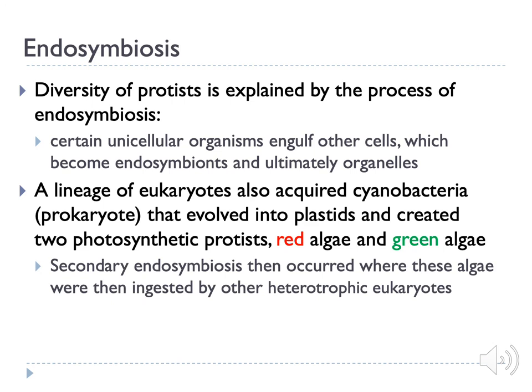Algae, which are eukaryotes with chloroplasts in them, evolved from cyanobacteria being acquired or engulfed. The cyanobacteria, which can photosynthesize, thus became the plastids such as chloroplasts in those cells. A secondary engulfing resulted in even more diversity, which we will see in the next slide.